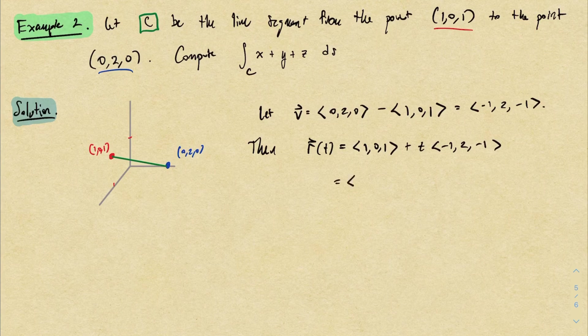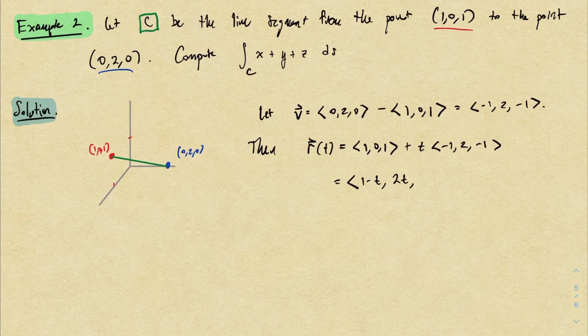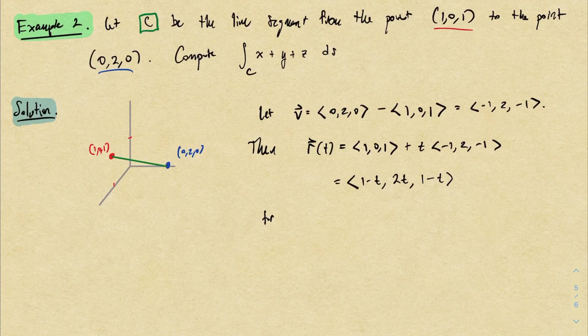And then I can combine all the components. I would get <1 minus t, 2t, 1 minus t>. Now the most important part here is to specify the correct parameter domain. We very specifically need to trace out the segment from the red point to the blue point, and your parameter domain here depends on what your parameterization is.